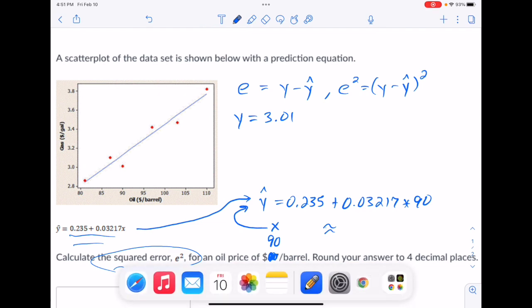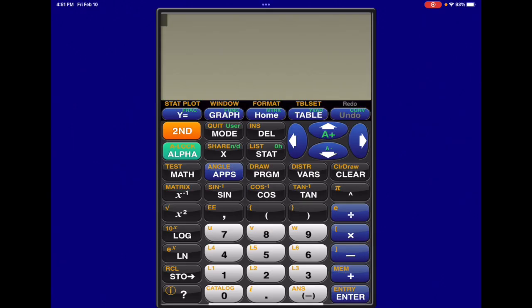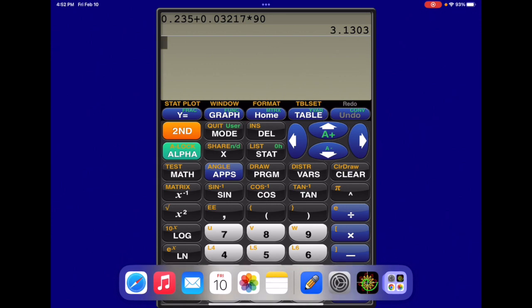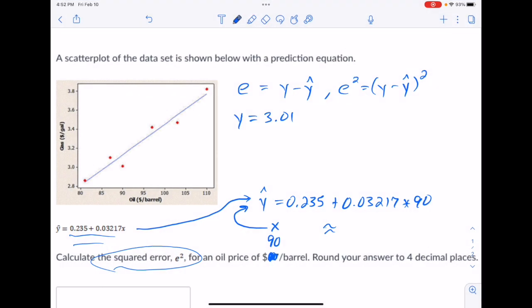So switching over to the graphing calculator, we just want to plug that in. We have 0.235 plus 0.03217 times 90, and that's going to give us our Y hat value. So 3.1303.